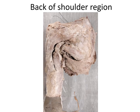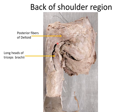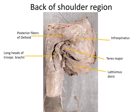In the back of the shoulder region we can see the posterior fibers of the deltoid muscle, the long head of the triceps brachii, the latissimus dorsi coming from the lower back and attaching to the humerus, the teres major, the infraspinatus, the supraspinatus region, and the teres minor muscle.